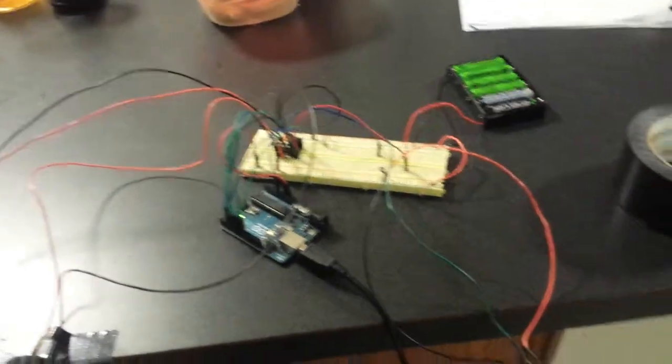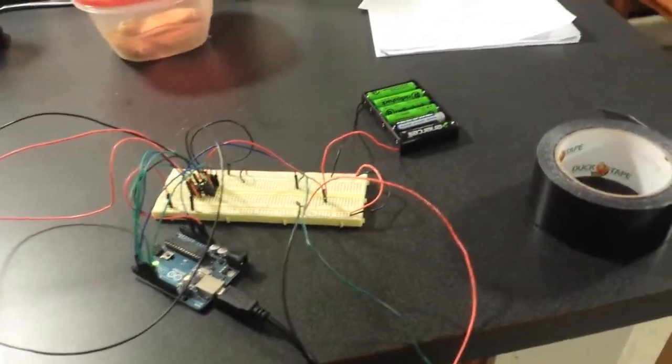You can see the two motors are hooked up to the Arduino using the L293D chip and the power supply located in the back with these six batteries, as well as this potentiometer hooked up so that I can get a good read on our pendulum, or what will be our pendulum.